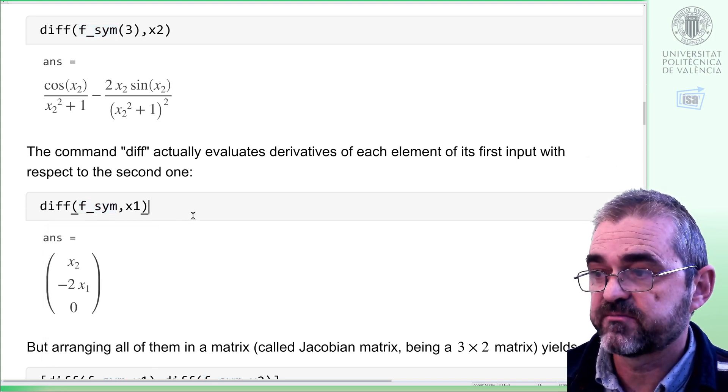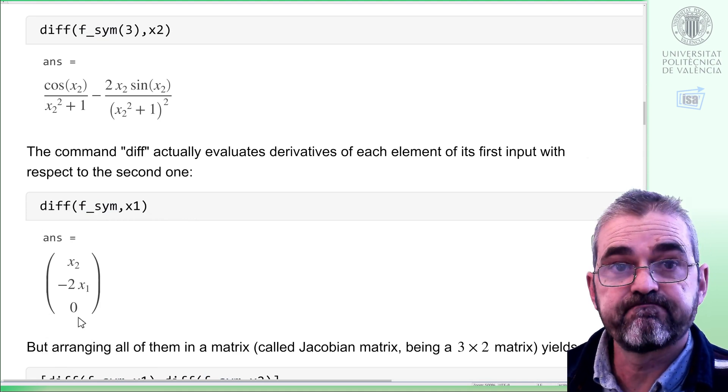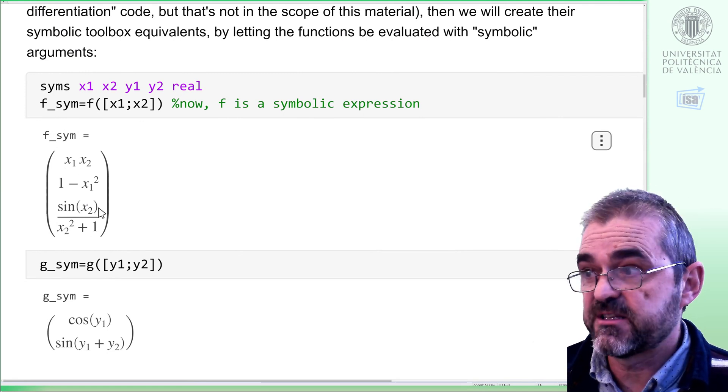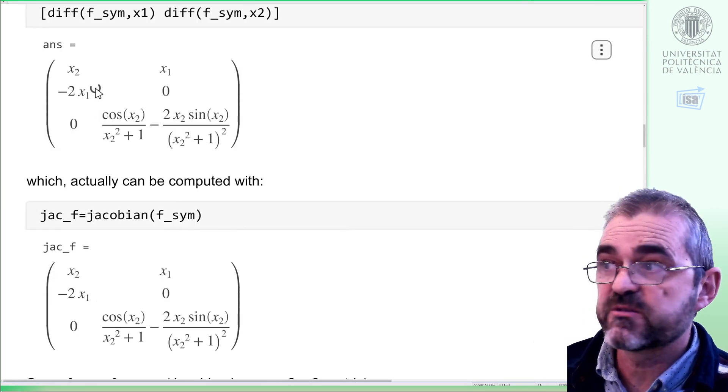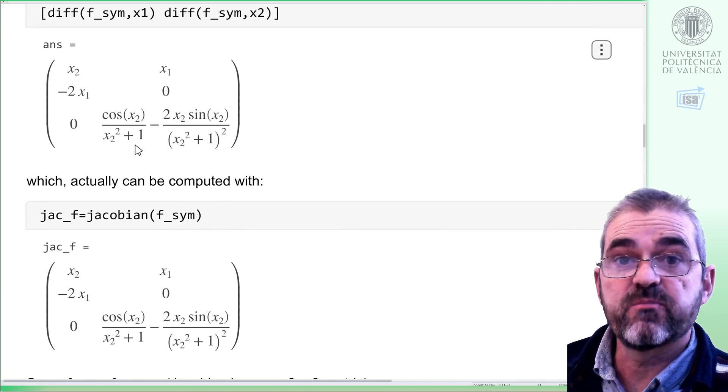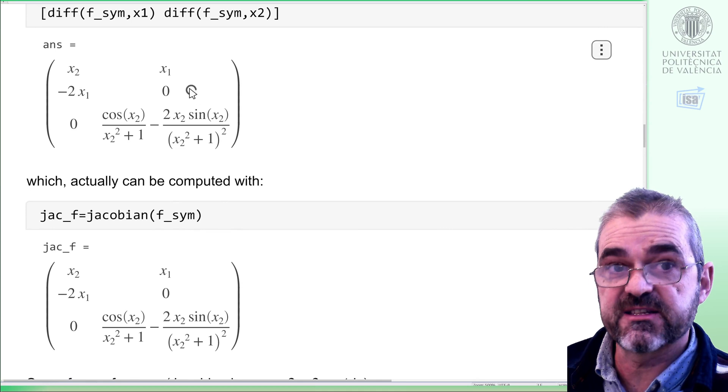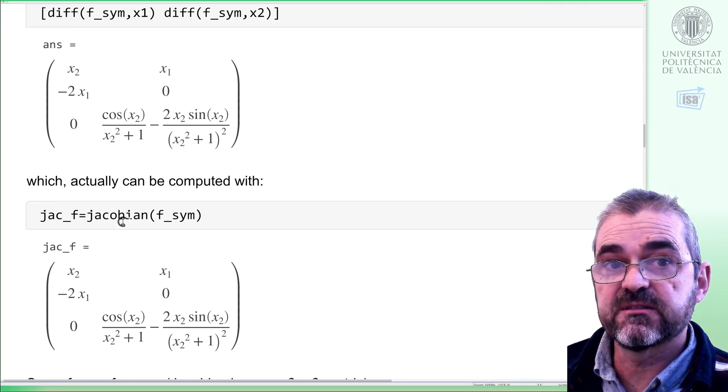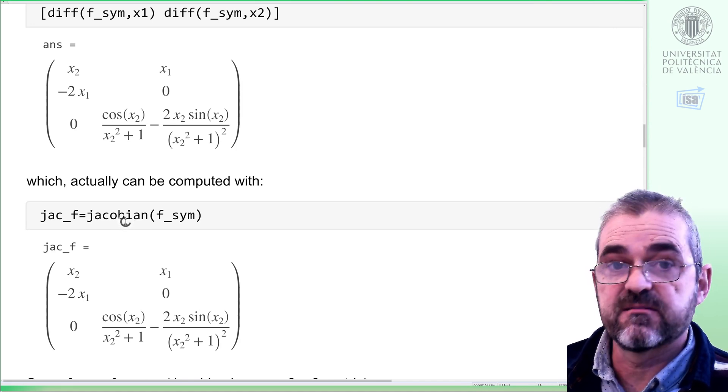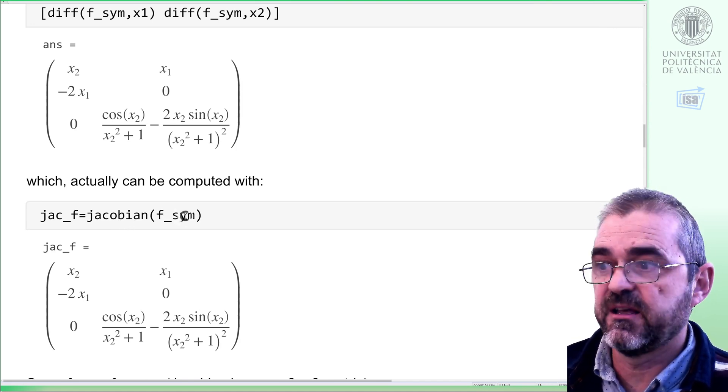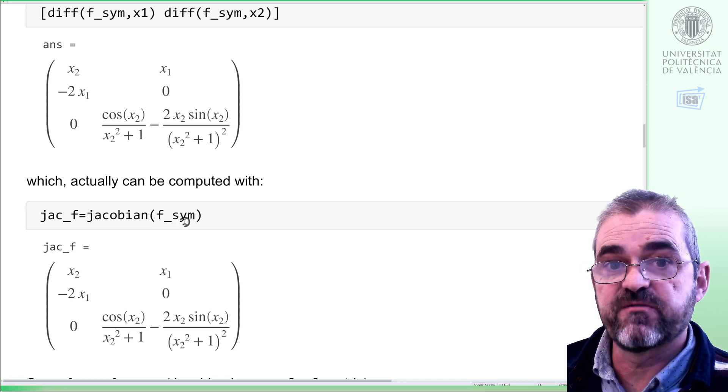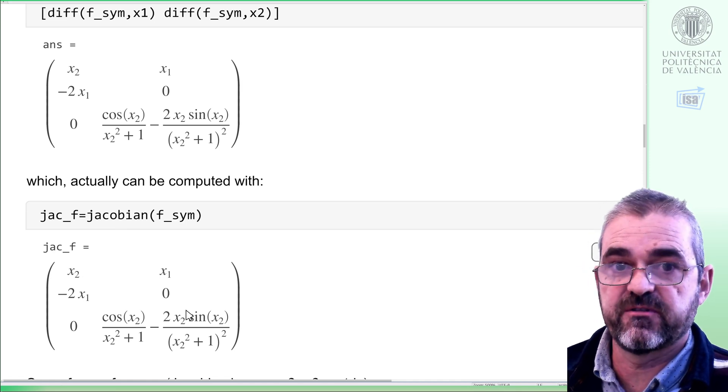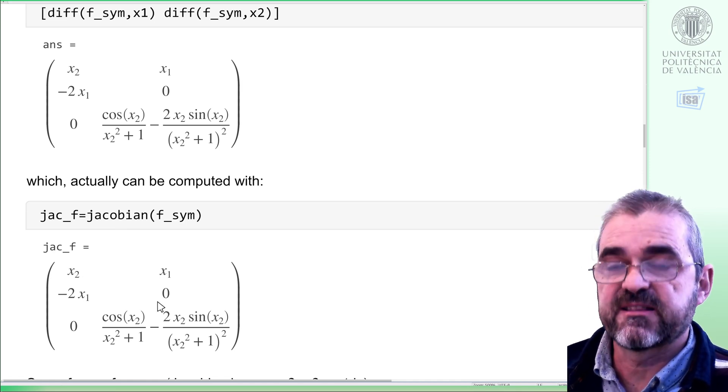As f_sym here depends on two letters, x1 and x2, if we arrange the partial derivatives with respect to x1 in the first column and the partial derivatives with respect to x2 in the second column, then that's called the Jacobian matrix. The MATLAB command, Jacobian, does exactly that. It takes all the letters in f_sym, and each of them goes to one column. Well, in lexicographic order, and capital letters first, just like in a dictionary. More on that later.